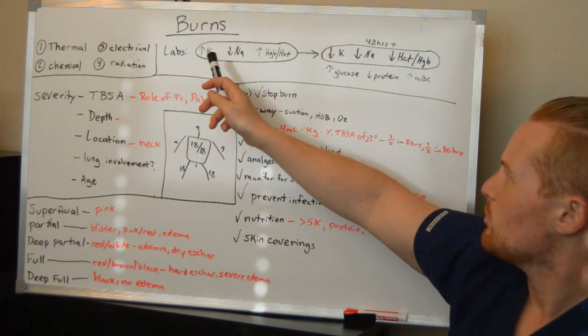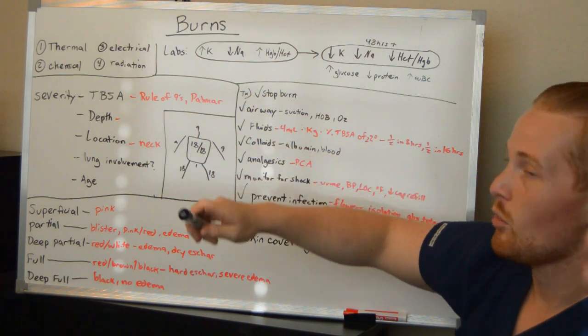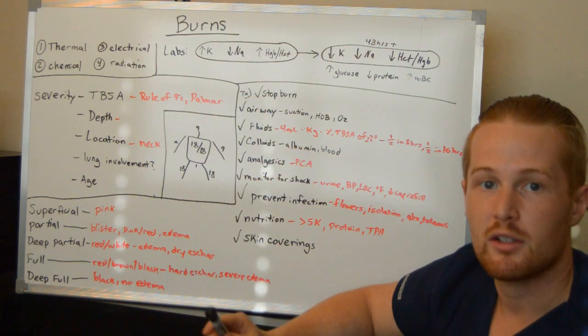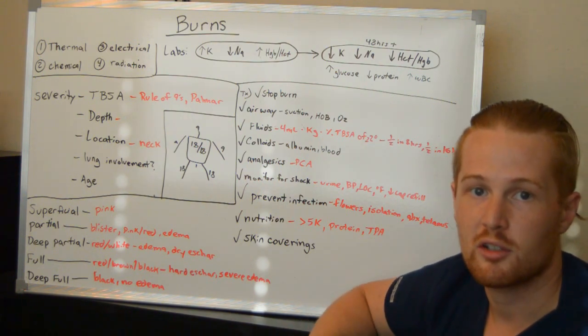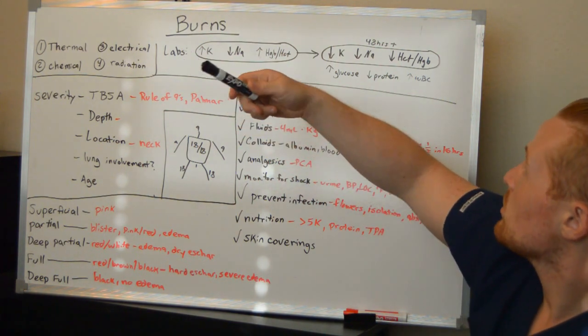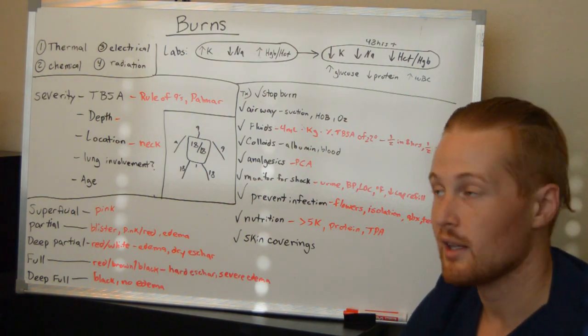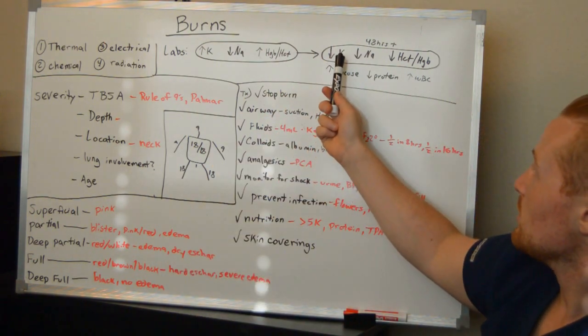Now, what are some labs you'll see with burns? You can see here, initially you're going to have a high potassium. Why is that? Well, potassium is found inside your cells. As the cells burst because they were burned, they're releasing potassium into the bloodstream. However, once the body has time to regulate, and the potassium has been excreted by the kidneys, you'll find that the patient has a low potassium.